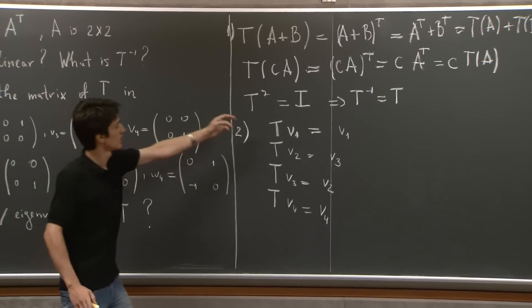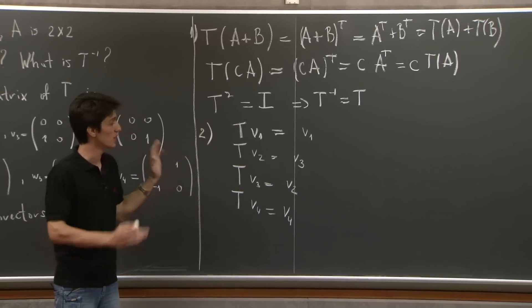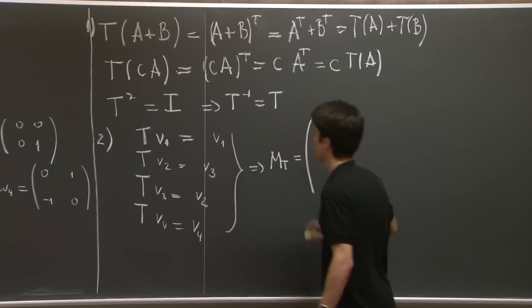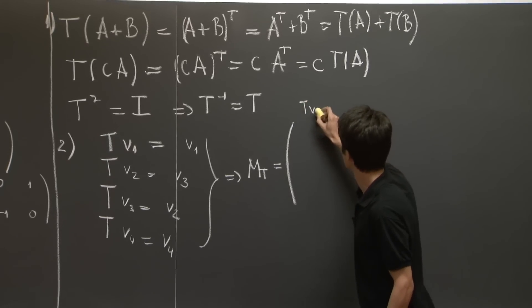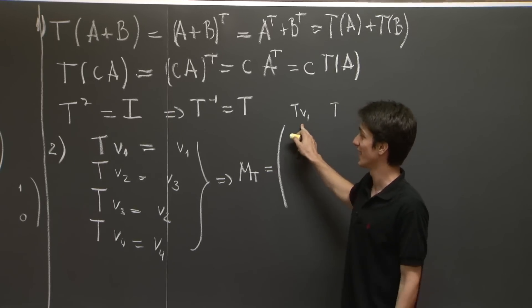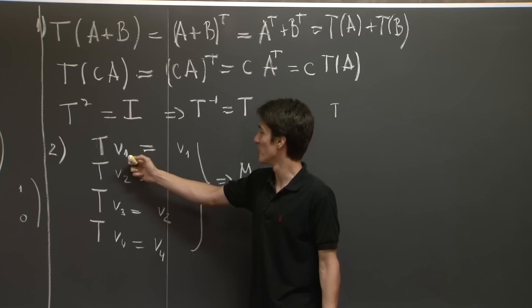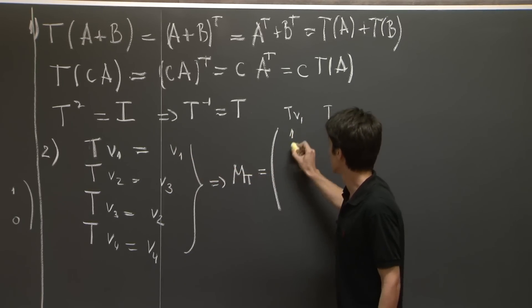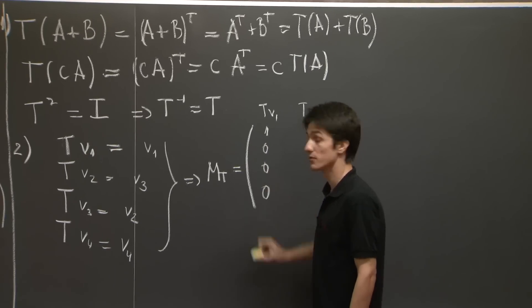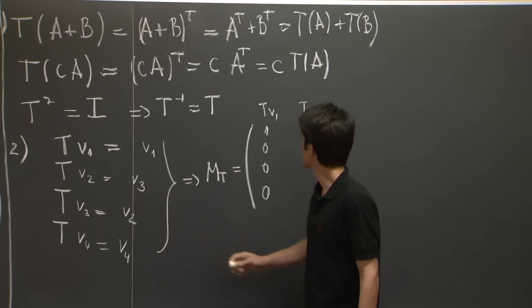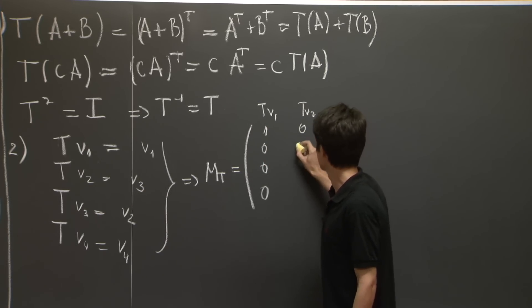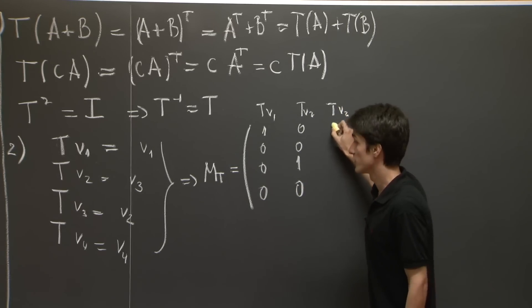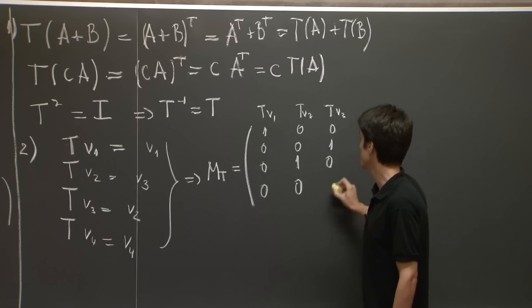So what we have now, we encode this into a matrix in the following way. The first column will tell us how T of V1 is expressed as a linear combination of the basis elements. In this case, it's just V1. So it's 1 times V1 plus 0 V2 plus 0 V3 plus 0 V4. T of V2 is V3. So we have 0, 0, 1, 0. T of V3 is 0 V1, 1 V2, 0 V3, 0 V4.